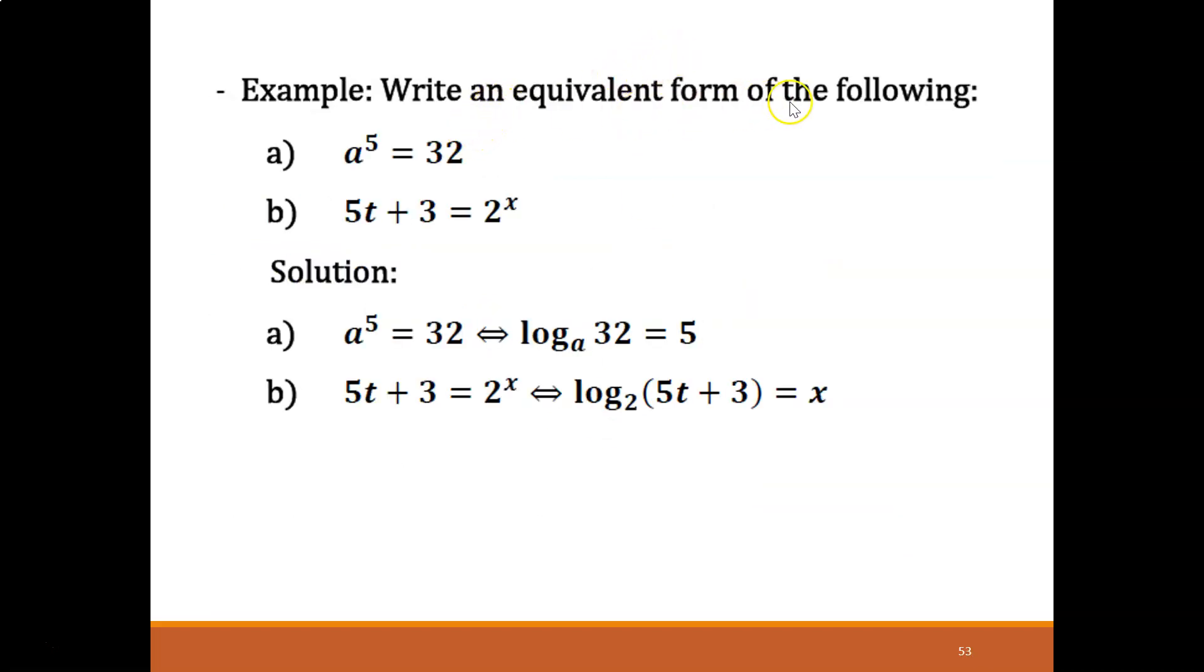Example: Write an equivalent form of the following. Part a: a to the power of 5 equals 32. Solution: a to the power of 5 equals 32, we can actually write it down in log form. The power will become large. The constant number, its base will become small. This is the base, this is the power.